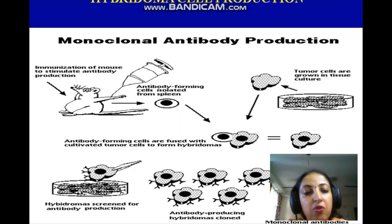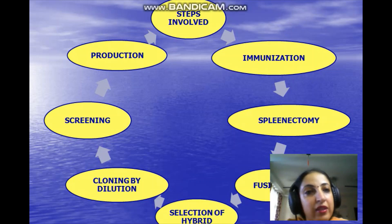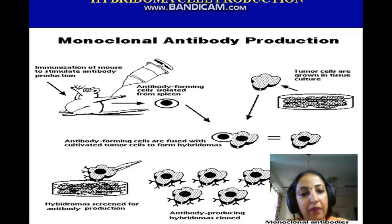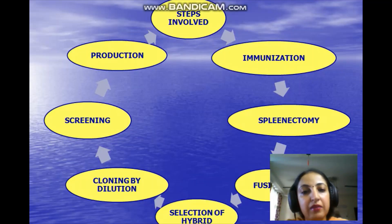How are monoclonal antibodies produced? The very first step is immunization — an animal or human being is immunized with an antigen. Here they used mice: antigens were injected into a mouse, and in response to the antigen, antibodies were produced, which were then to be isolated. We all know that antibodies are released by B cells, and the major source of B cells is the spleen.